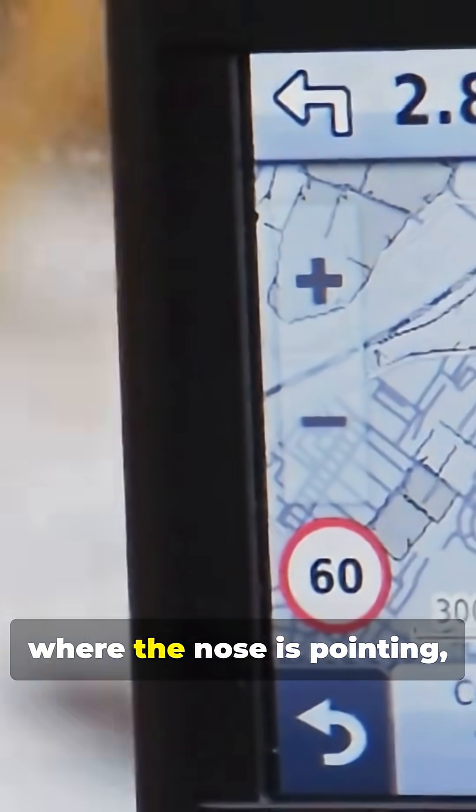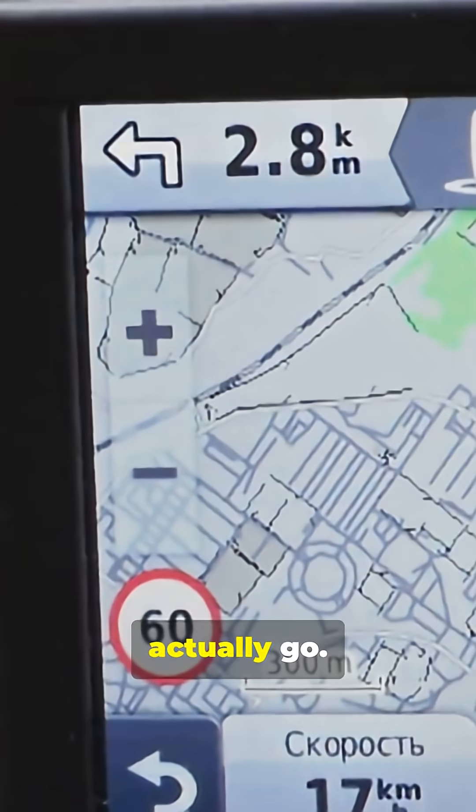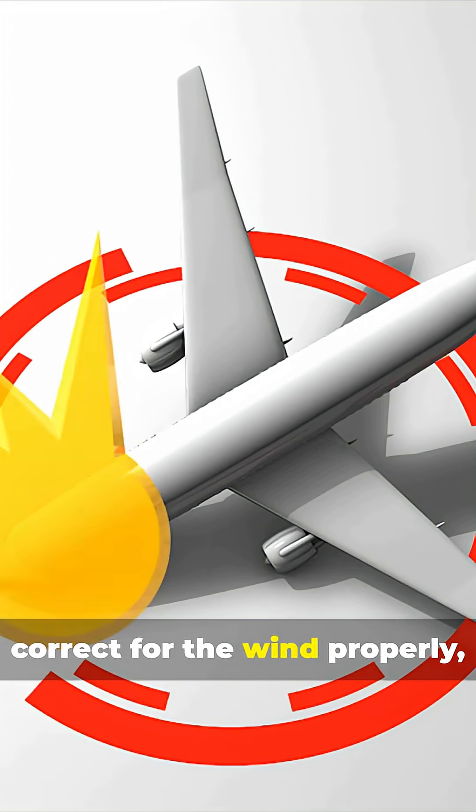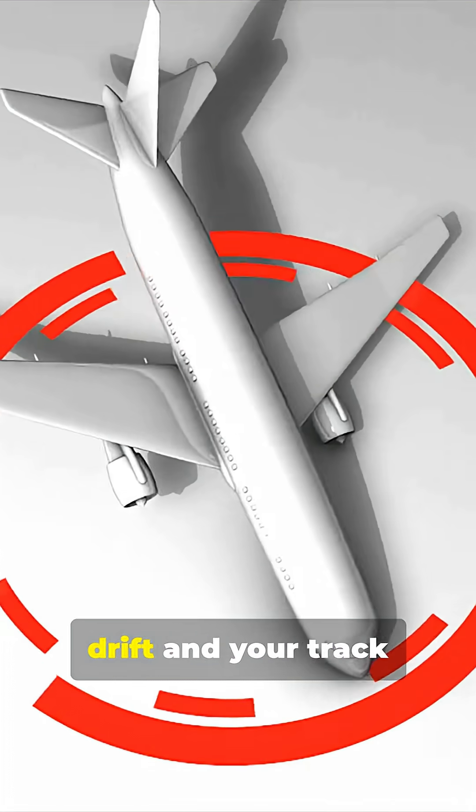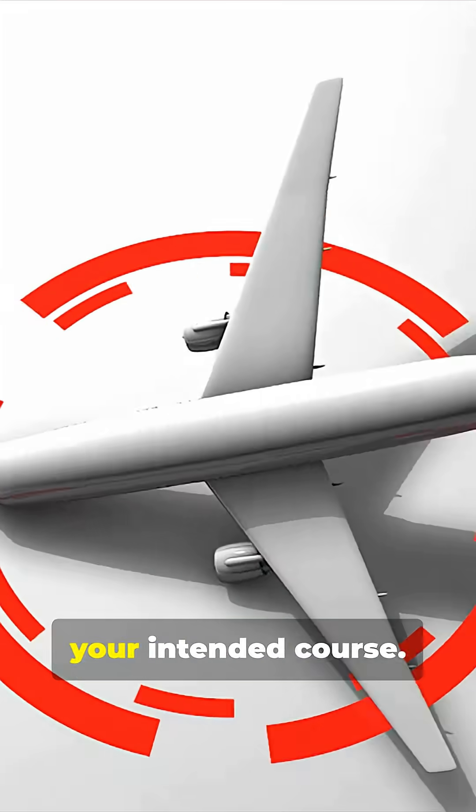It doesn't care where the nose is pointing, only where you actually go. If you don't correct for the wind properly, the airplane will drift, and your track will shift away from your intended course.